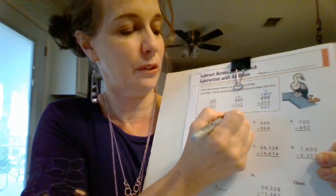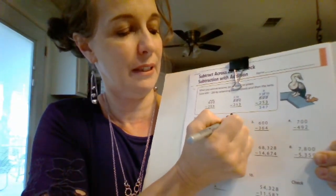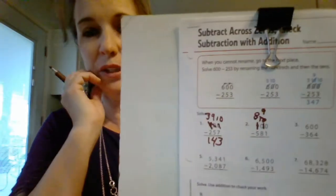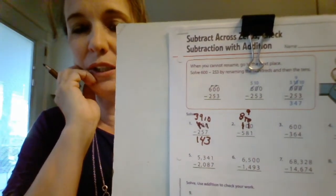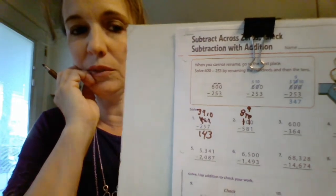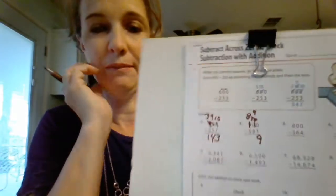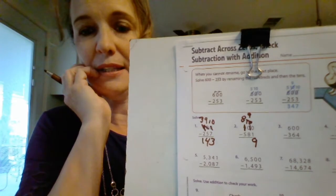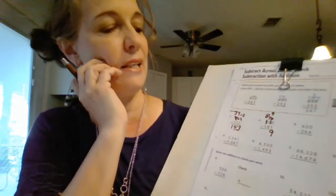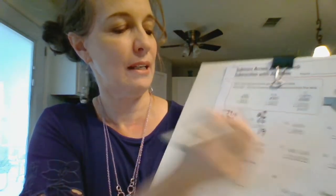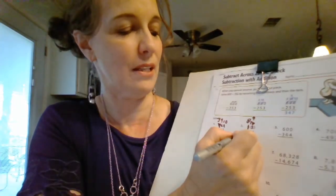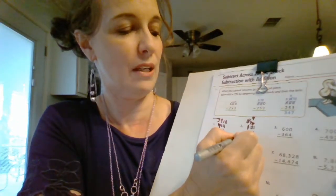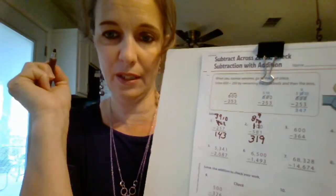Mark out your ten groups of ten, make it a nine, and put ten ones down. Ten ones minus one is nine ones. Nine tens minus eight tens is one ten. Eight hundreds minus five hundreds is three hundreds.